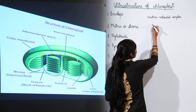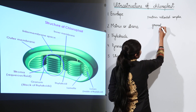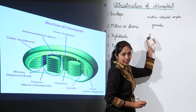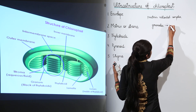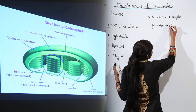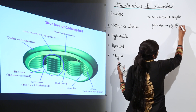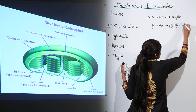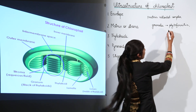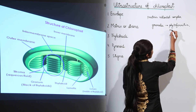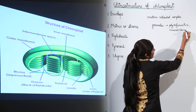First of all, the stroma contains granules. These granules can be of phytoferritin or they can be some other mineral elements.